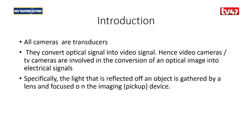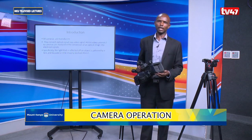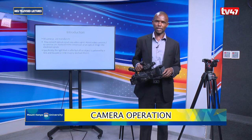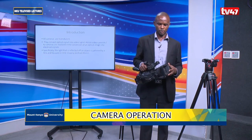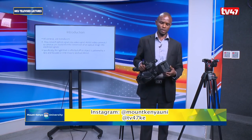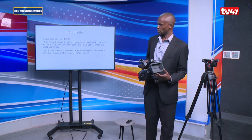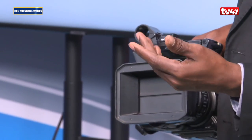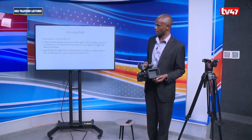This is our camera here, and all cameras are transducers. What we mean by a device being a transducer is an assembly or device that can change one form of energy to another. Video cameras are able to change the optical image into a video signal. The cameras usually convert the optical signal into a video signal; hence video cameras or TV cameras are involved in the conversion of an optical image into electrical signals.